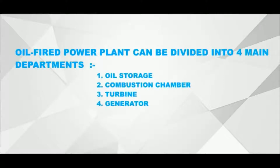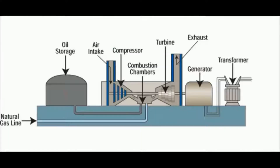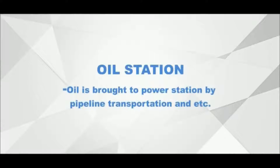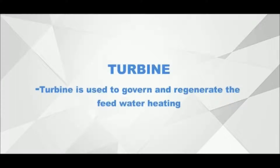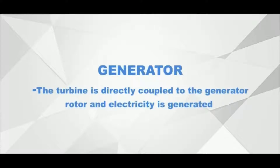An oil-fired power plant can be divided into four main departments: oil storage, combustion chamber, turbine, and generator. Oil is brought to the power station by pipeline transportation. The combustion chamber is a device for generation of steam for power generation. The turbine is used to govern and regenerate the feed water heating. The turbine is directly coupled to the generator rotor and electricity is generated.